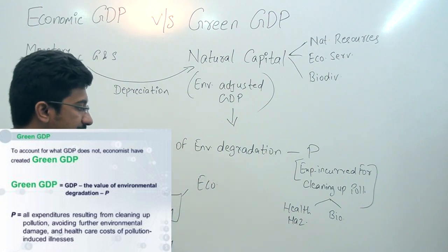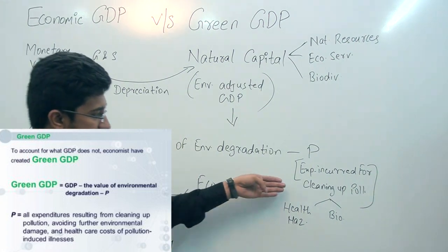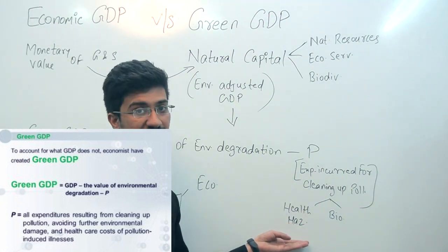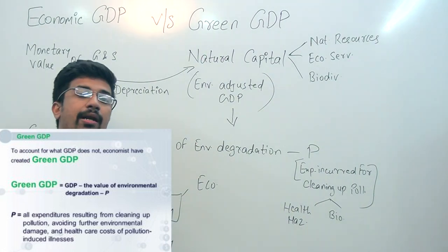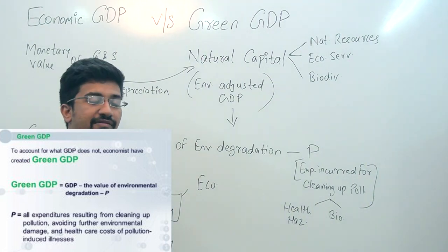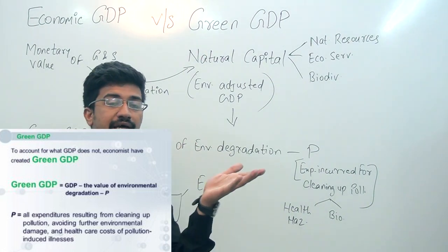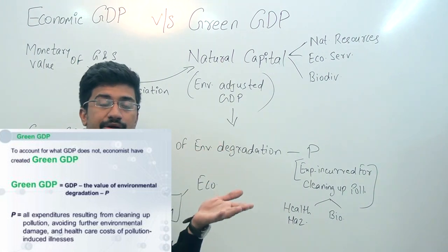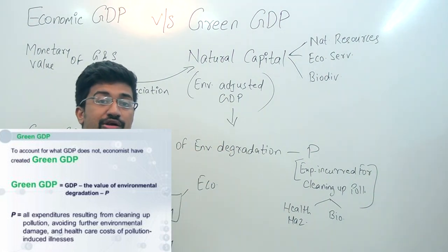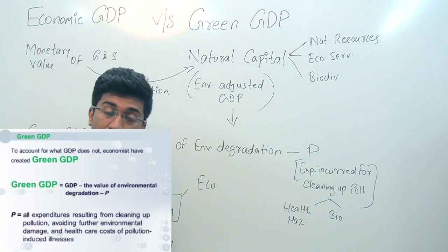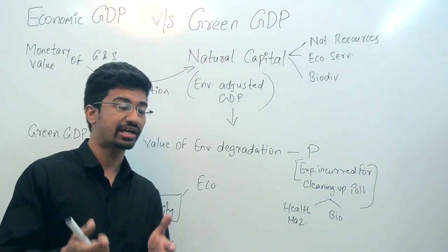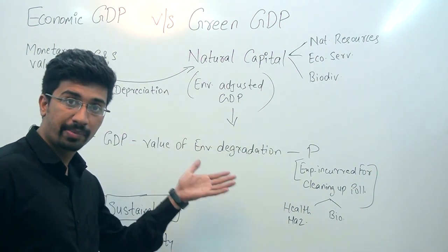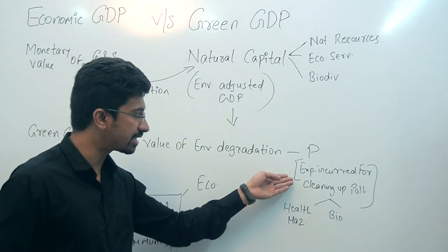For example, what happens in Delhi when there is stubble burning? Particulate matter — PM concentration — increases in the air, enters your lungs and respiratory system. The cost of this health and environmental damage must be subtracted when calculating Green GDP.